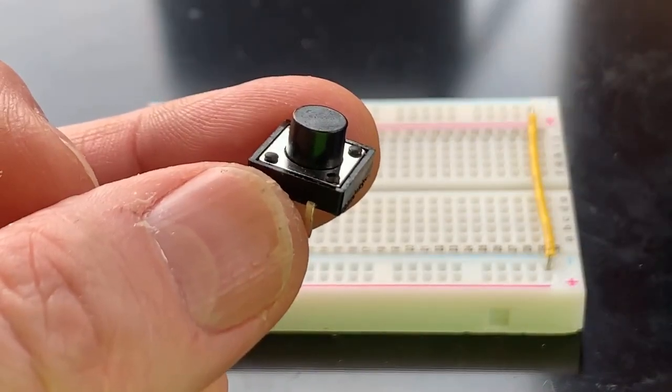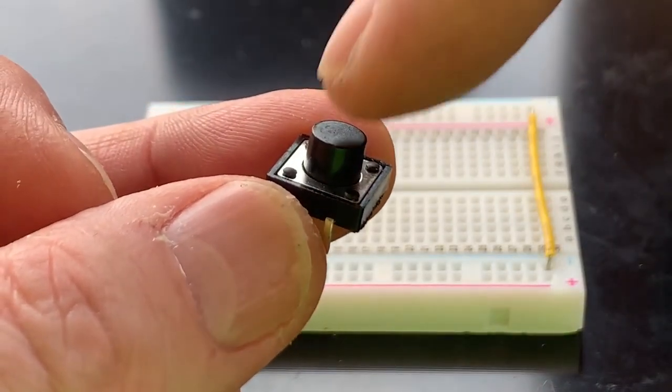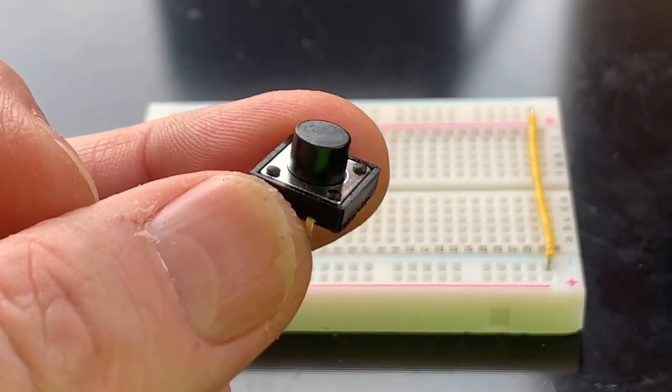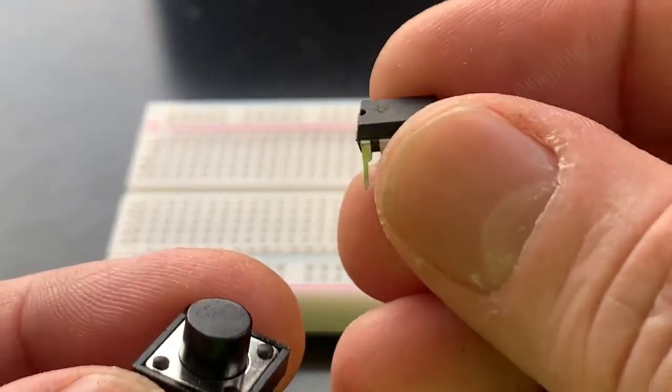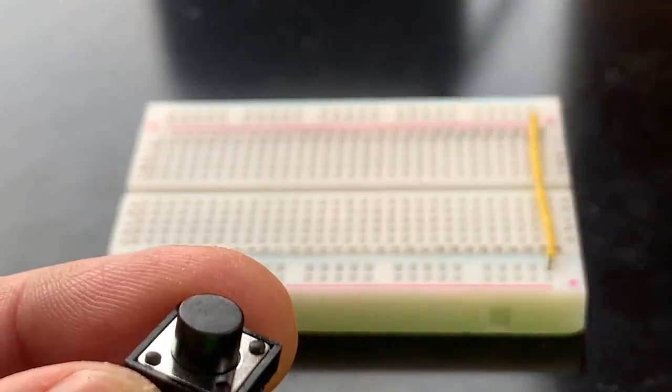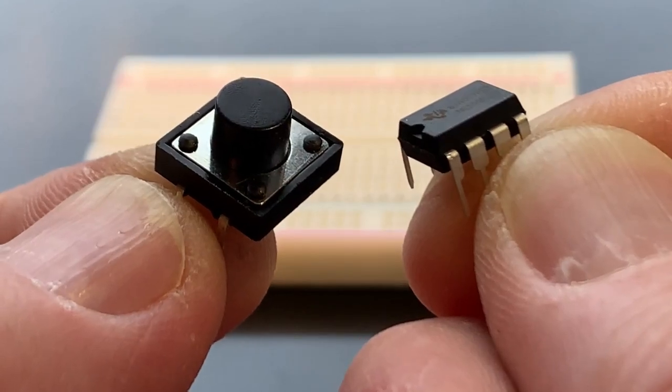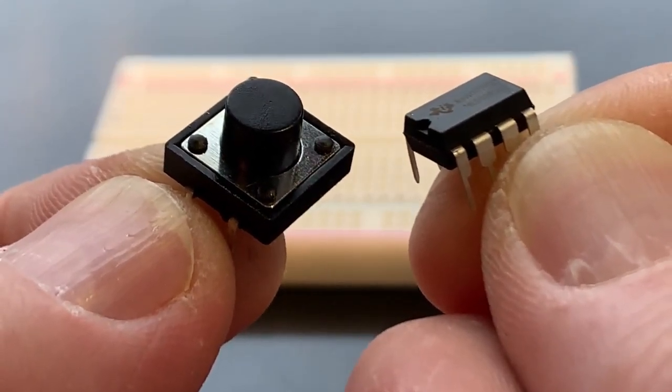I'm going to attempt to explain how to make a simple latching circuit with a momentary push button switch and an LM555 IC timer chip. This is useful as a power switch when you don't want to use a toggle or turn different parts of a circuit on and off.